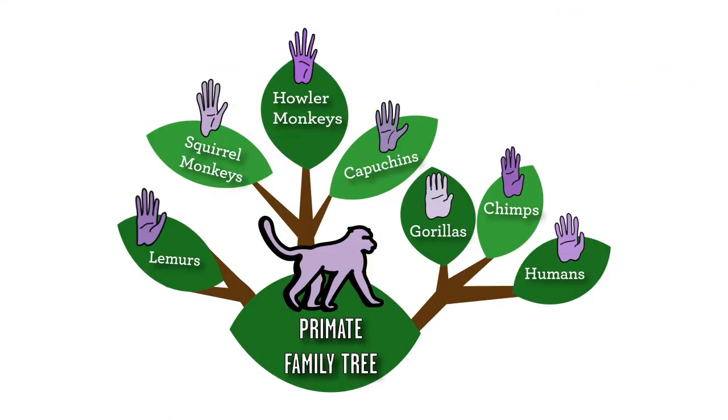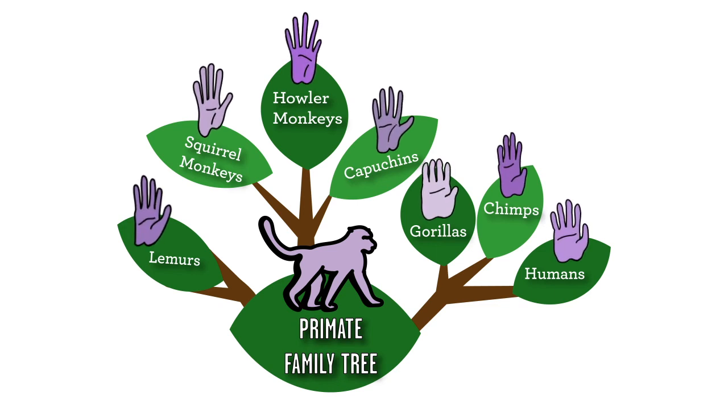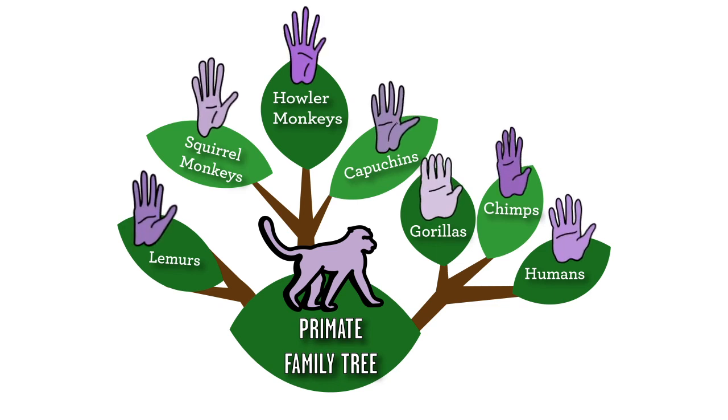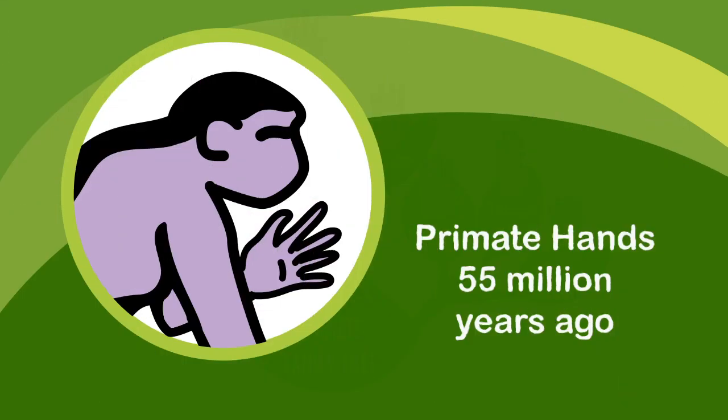Humans are primates, and our extended family includes monkeys and apes. All of the primates, including humans, have hands that are remarkably similar. We all have thumbs that wiggle. Our primate ancestors evolved dexterous hands around 55 million years ago.